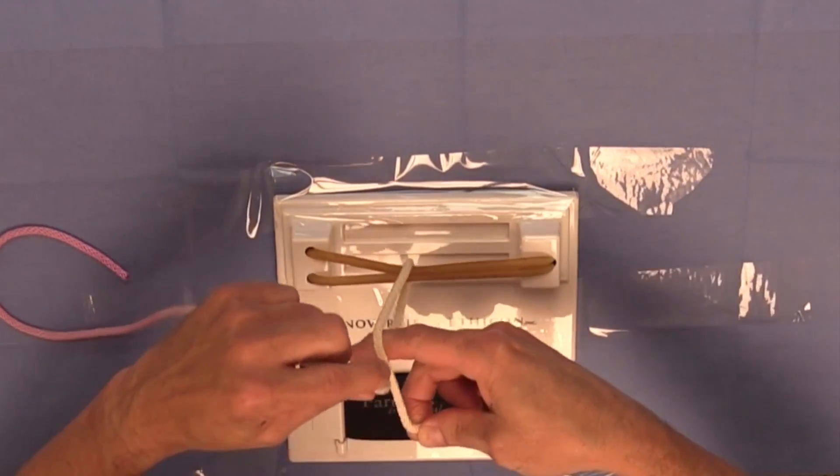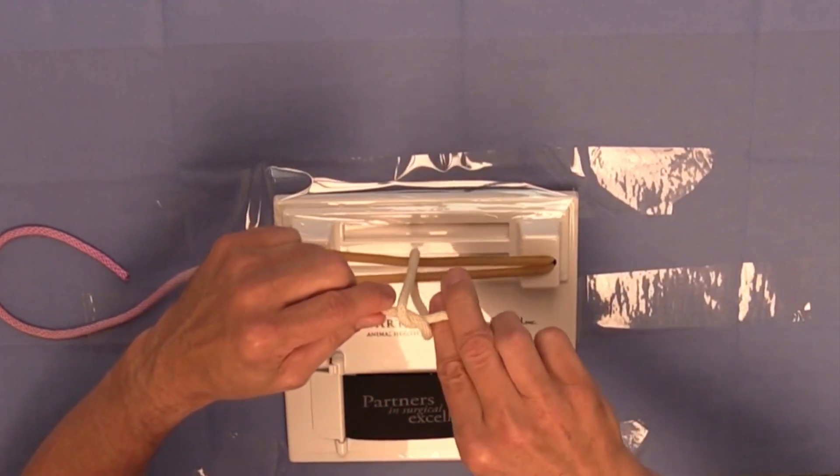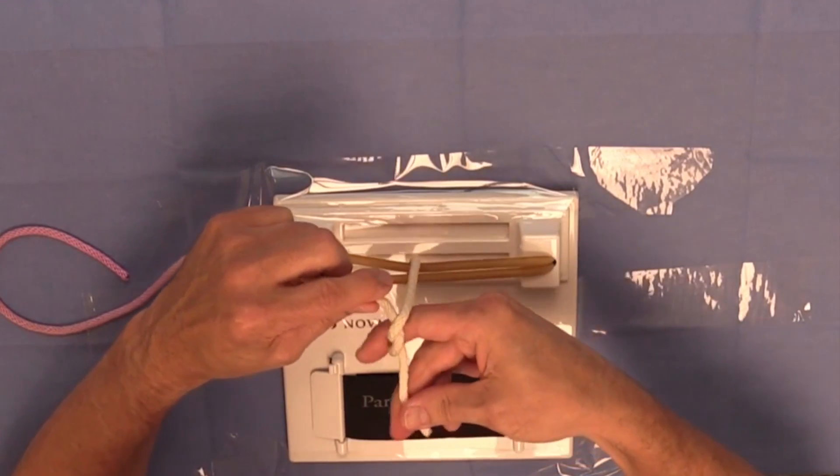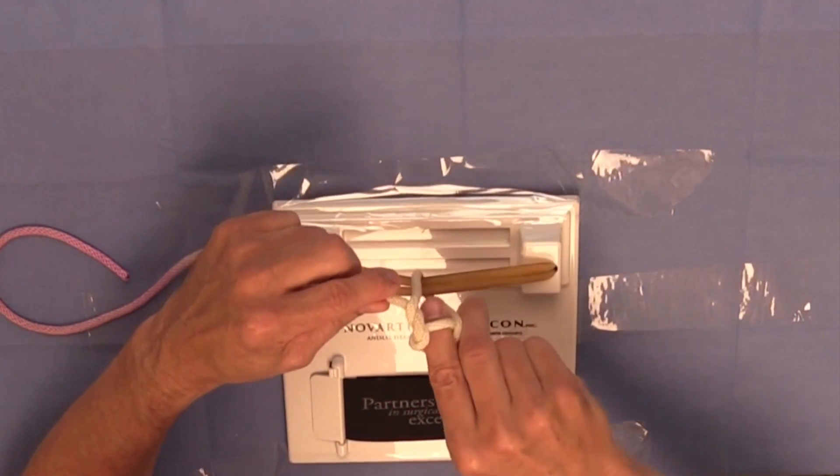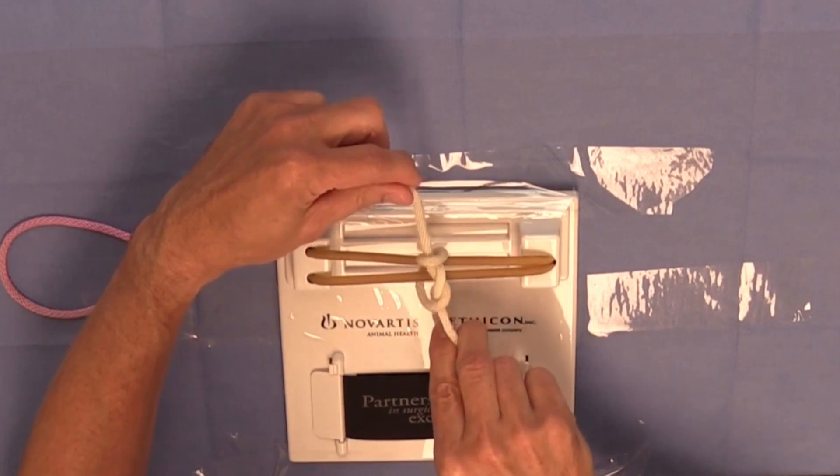I'm simply going to go around. This would be a simple square knot, and then go back through again, twice. Now I've constructed a surgeon's throw.